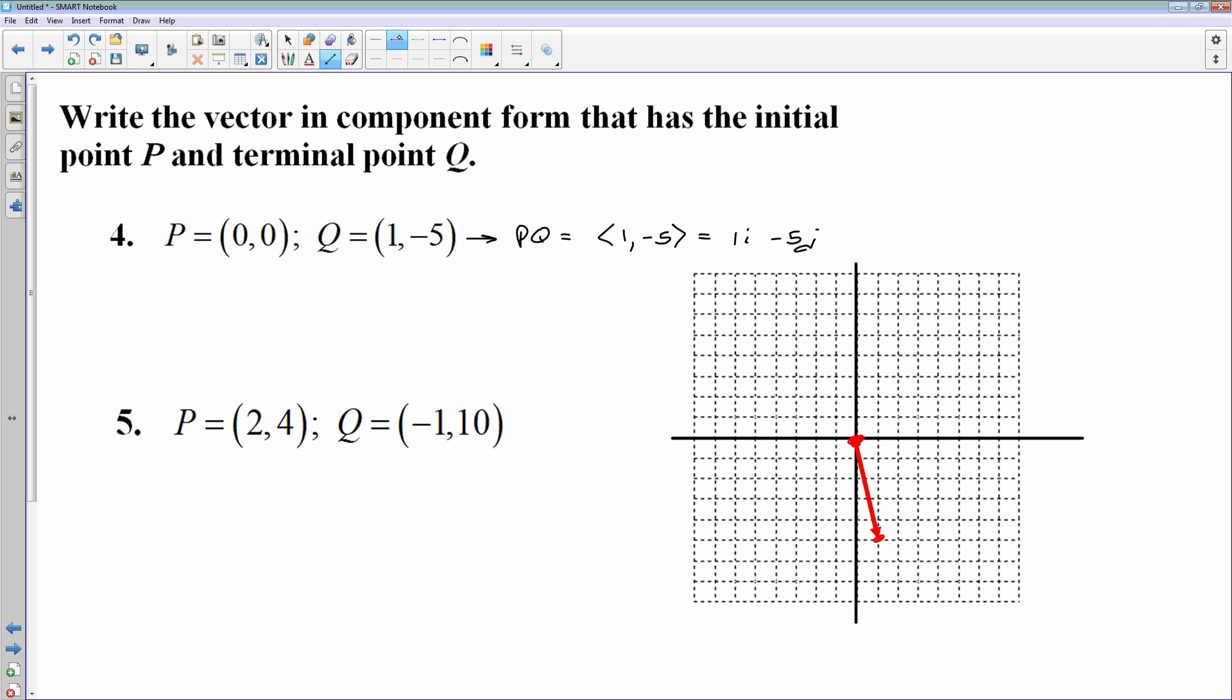Number 5, we made it a little bit more difficult because 5 does not start at the origin. We start at the point 2, 4. So 2, 4, we're starting right here. Change that to blue. And then we're ending at negative 1, 10, which is somewhere way up here. Now, one way we could figure out how far we went, some of y'all may be able to look and say, okay, if I go from 2 to negative 1, well, my x's, I went to the left 3.